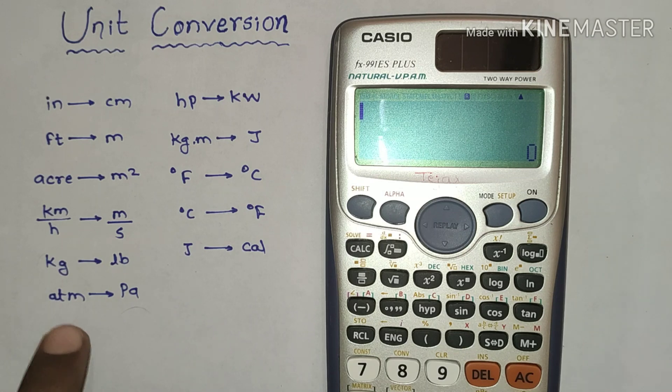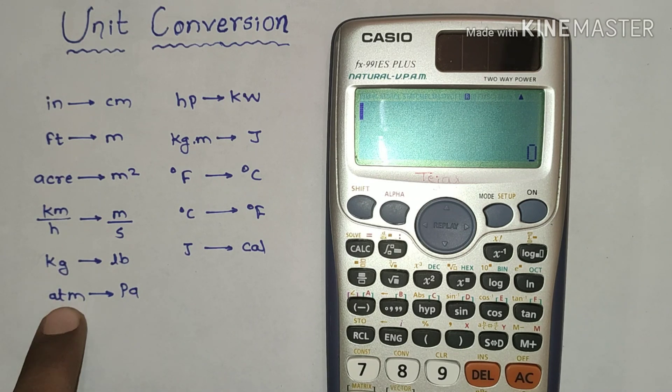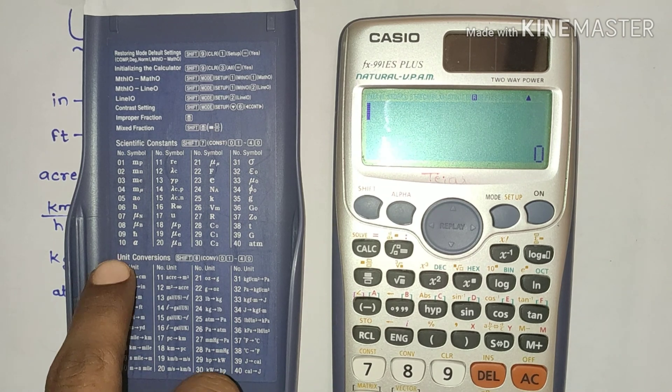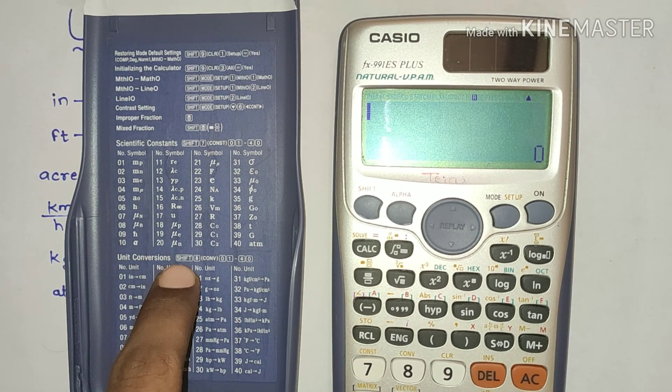As you can see, I have written some units and I want to convert them into other units with the help of a scientific calculator. You can do that in just one step. First, look at the back cover of the scientific calculator. You can see there is unit conversion, and to do that, press shift and press 8.